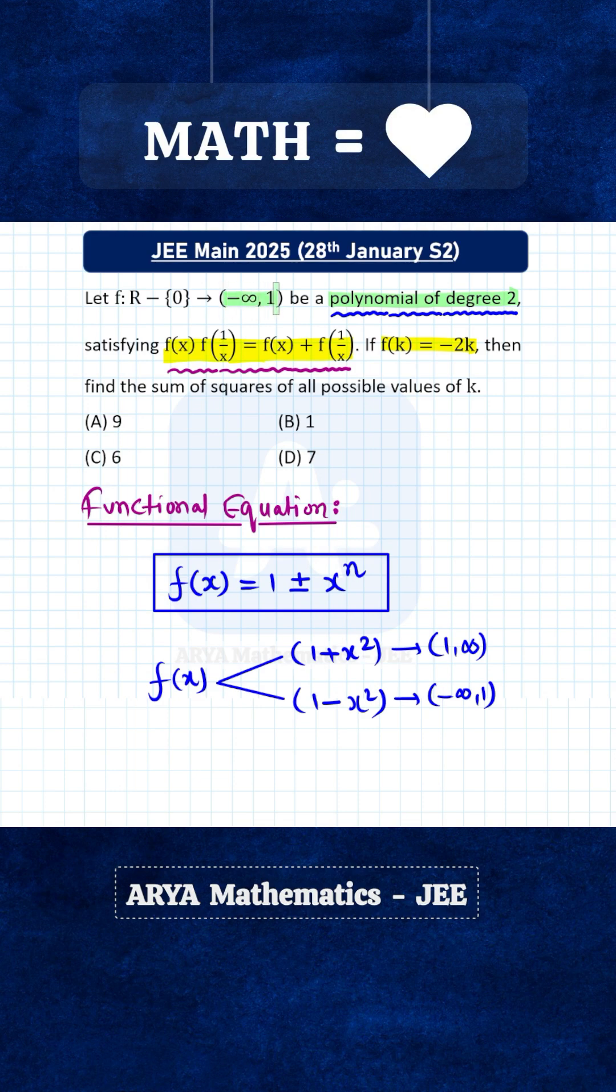For the given function, the co-domain is minus infinity to 1. So therefore f(x) cannot be 1 + x², it has to be 1 - x². Now f(k) = -2k. f(x) is 1 - x², so f(k) will be 1 - k² and this equals -2k.